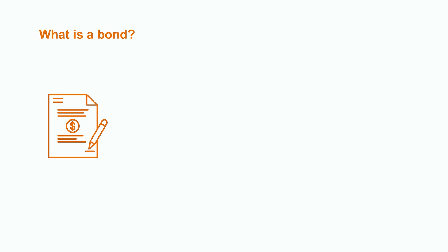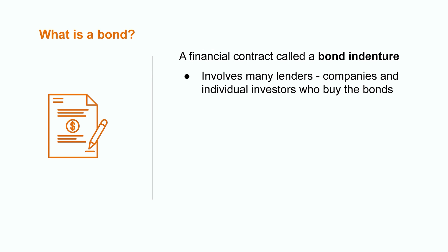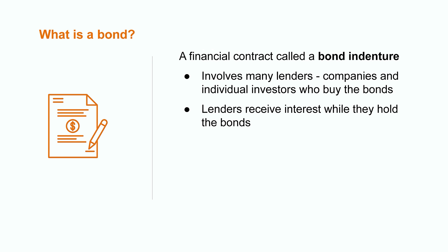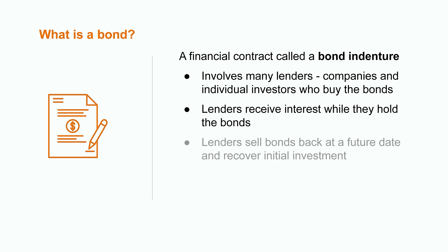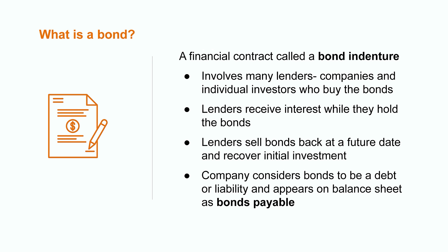So what exactly is a bond? Well, a bond is a financial contract, referred to as a bond indenture, involving many lenders instead of just a single institution, such as a bank. These lenders can include individual investors and companies that have agreed to buy the bonds with the intention of earning interest while they hold them. The goal is that at an agreed upon date in the future, the investors will sell the bonds back and recover their initial investment. From the company's perspective that issued the bonds, this is considered to be debt or a liability and appears on their balance sheet under the title of bonds payable.